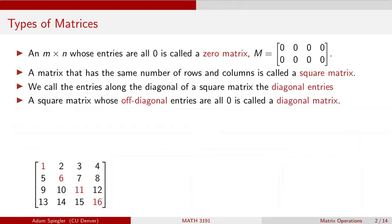And so a matrix where all of the off-diagonal entries are equal to zero, we call this a diagonal matrix. So over here, down below, is an example of a diagonal matrix. All of the off-diagonal entries are equal to zero, and then we have some values along the diagonal.